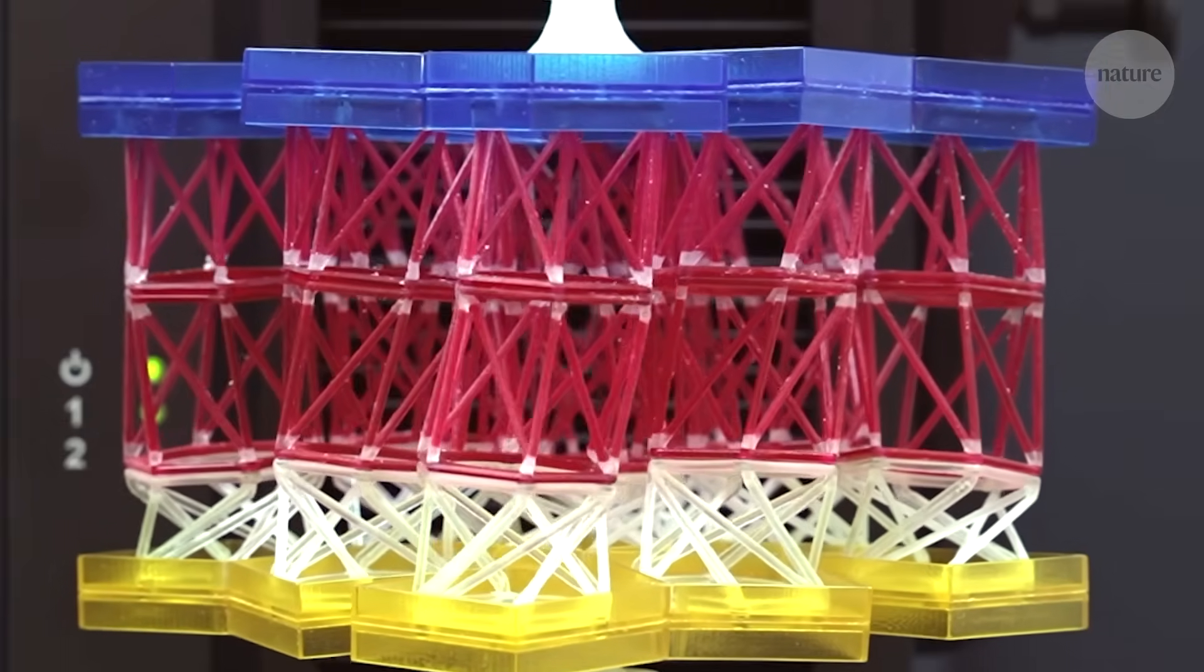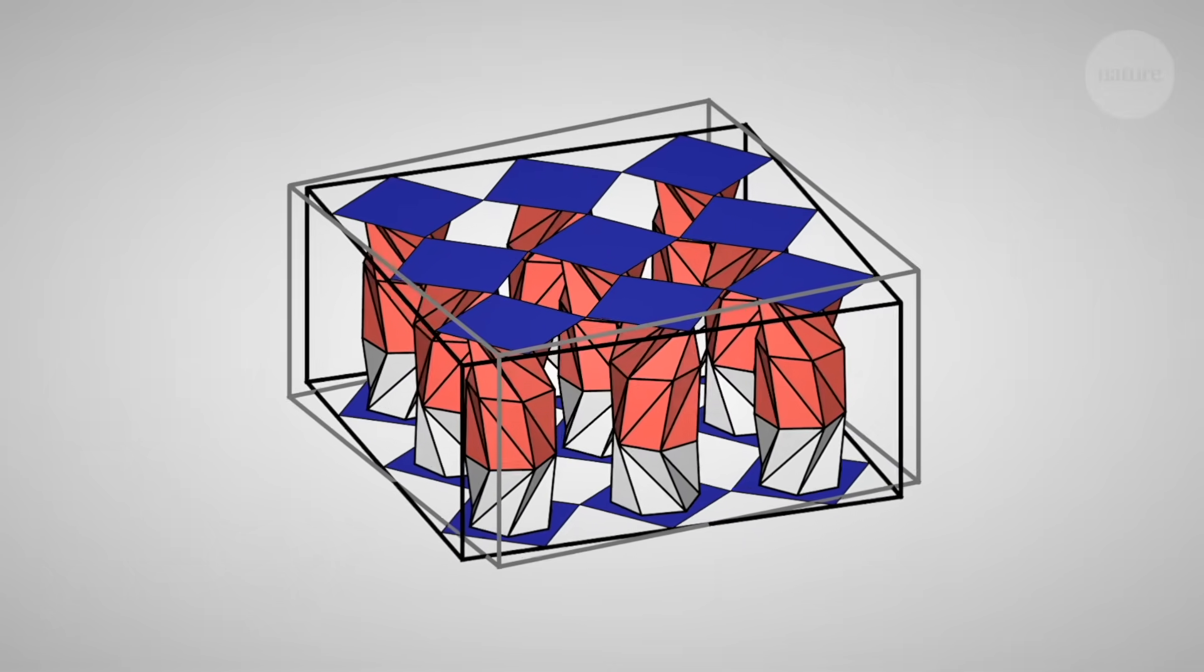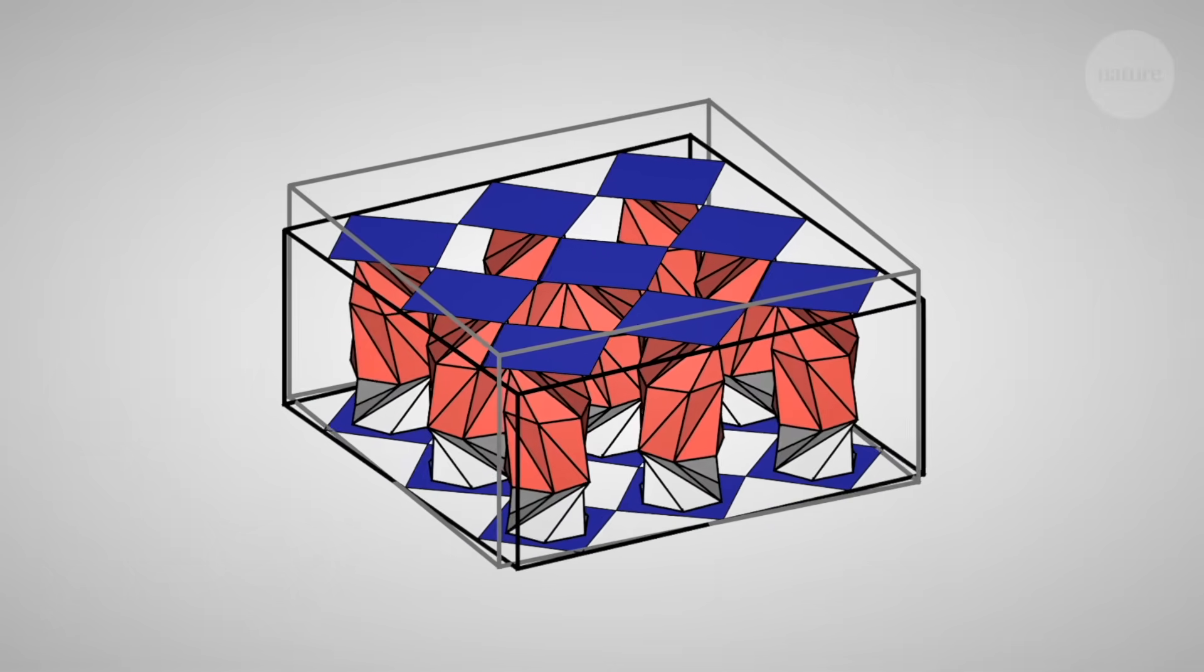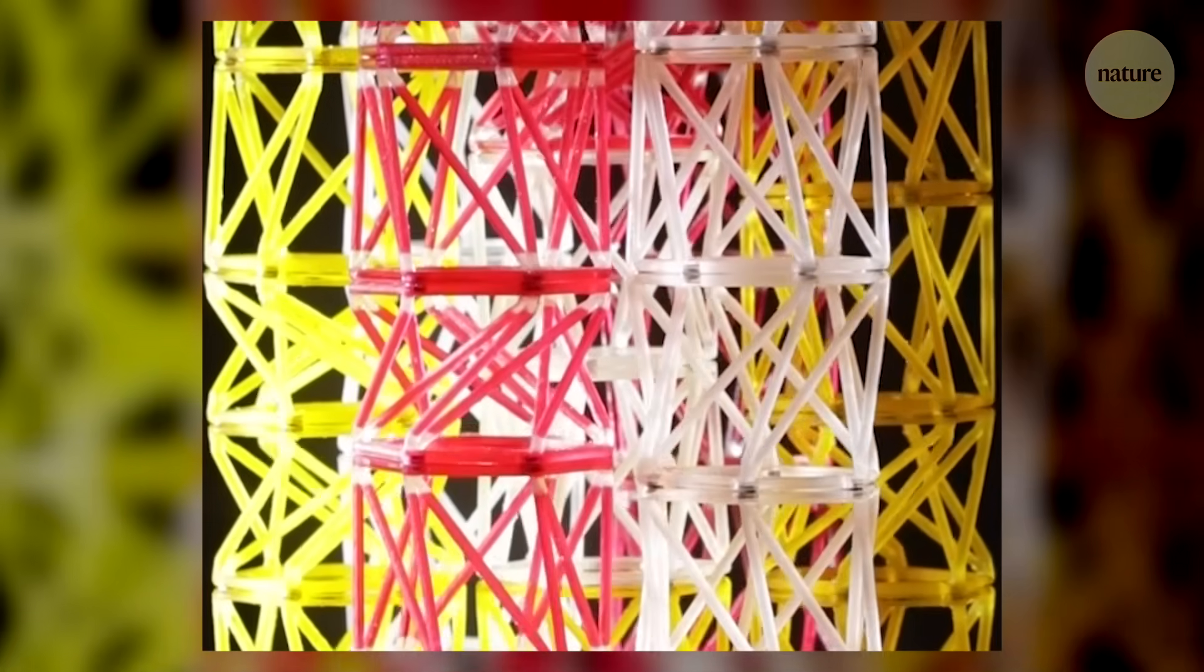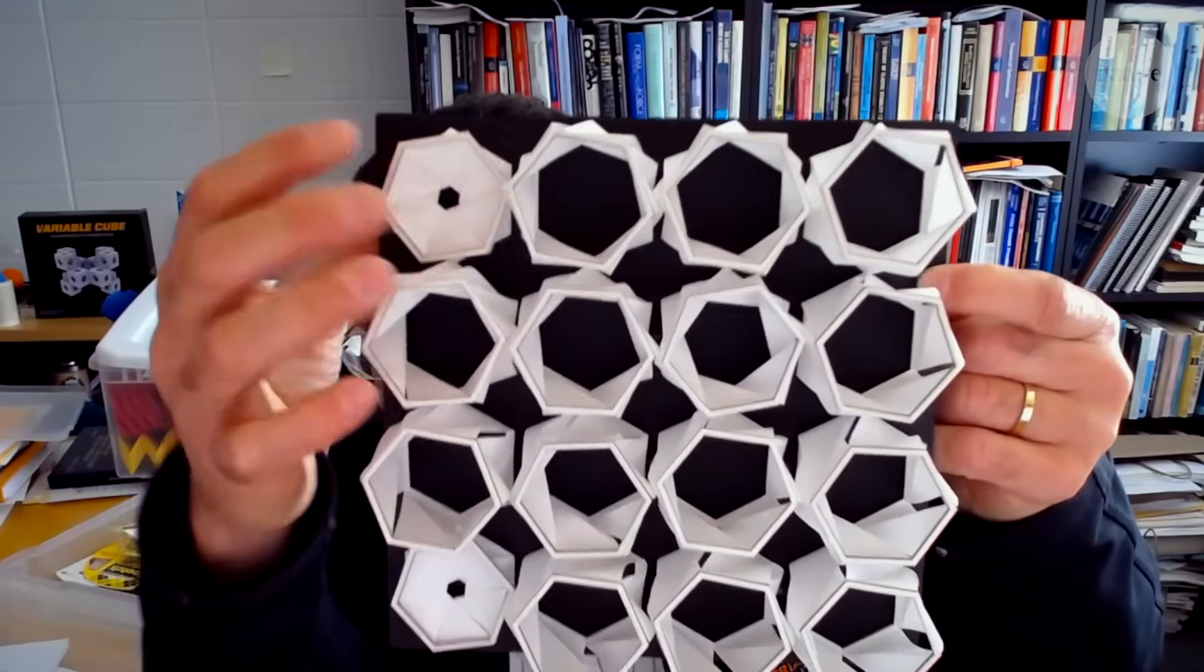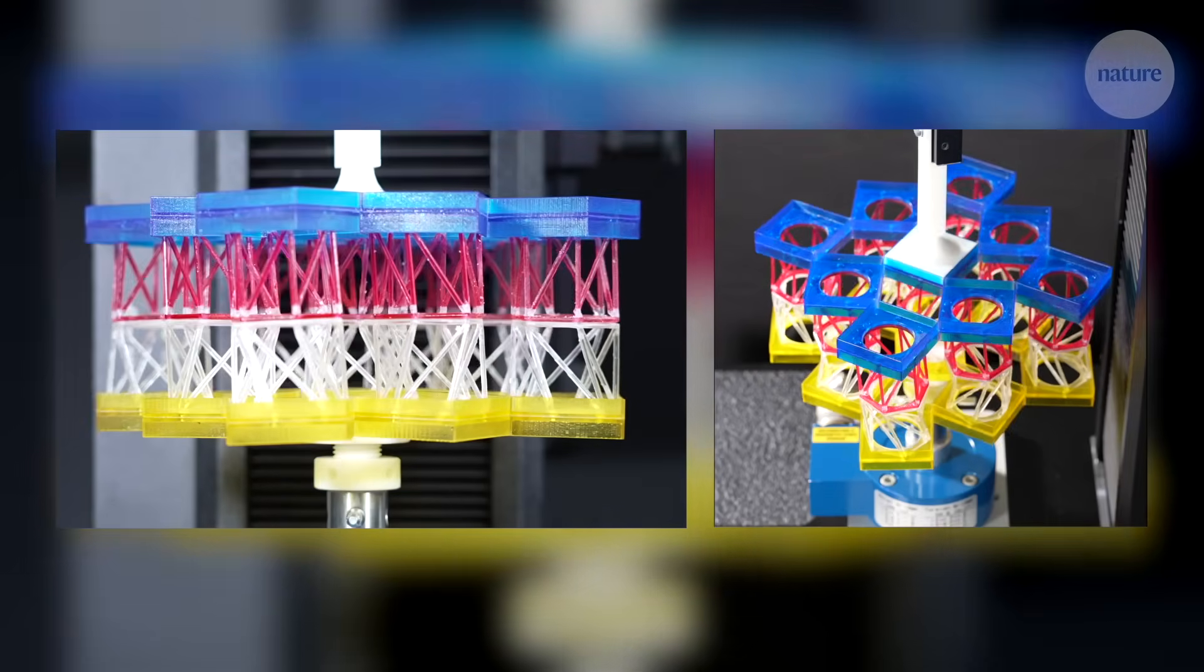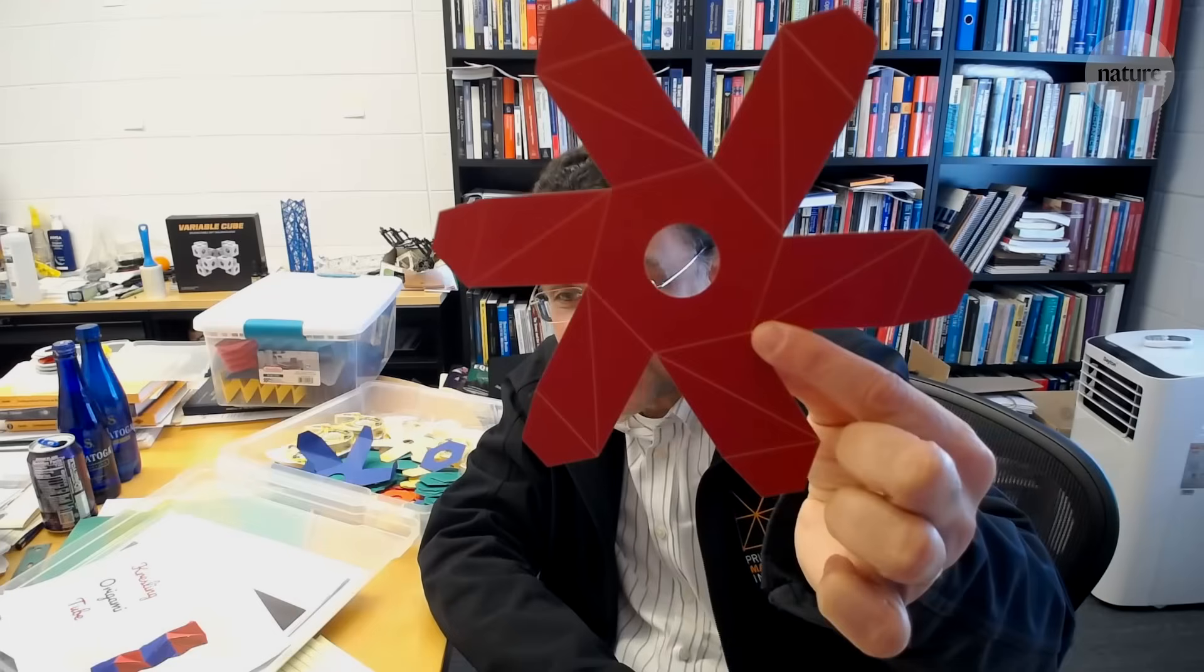This is a metamaterial. These complex modules can each fold, twist and compress, giving the overall structure surprising properties that could be used in engineering, robotics and even encryption. And their design was inspired by origami.